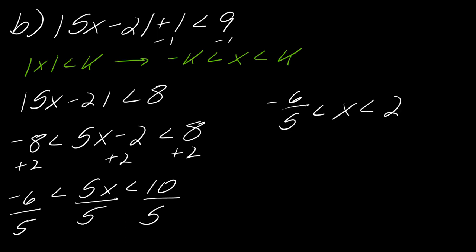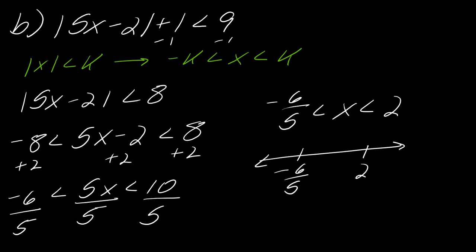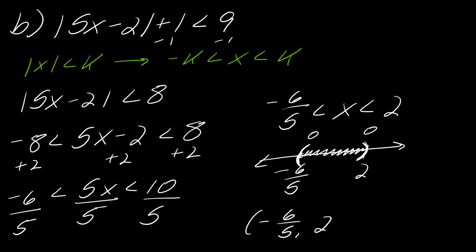Now drawing the number line: x is between negative 6 fifths and 2, so shade everything in between. Since this is a strict less-than, both endpoints get round brackets. Reading the interval from left to right, we start at negative 6 over 5 and go to 2, both with round brackets, giving interval notation: negative 6 over 5 to 2, open on both ends.